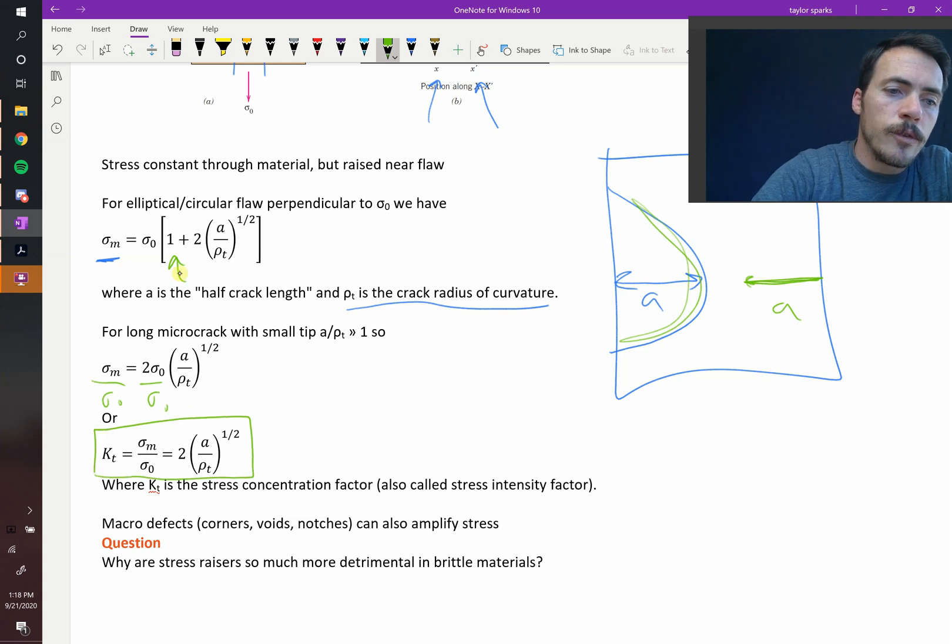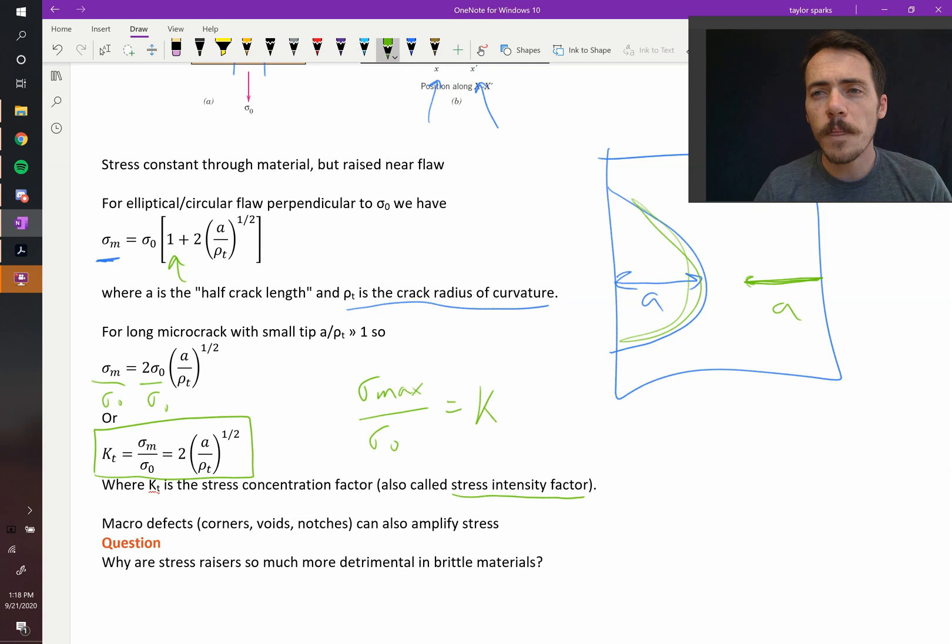So this ratio of your maximum stress to your applied stress, sigma-m, the maximum stress divided by the stress that you apply, is called the stress concentration factor, sometimes called the stress intensity factor. Think of it as like the multiplier. It's the multiplier of how much stronger the stress is, or how much greater the stress is in the vicinity of the cracks present in your material.